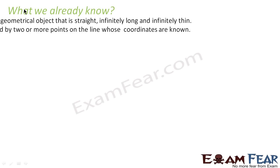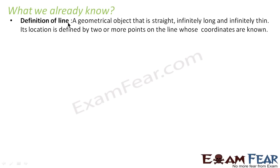Before we start the advanced concepts of straight lines, we should know some basic information. A straight line is a geometrical object that is straight, infinitely long, and infinitely thin. Its location is defined by two or more points whose coordinates are known.